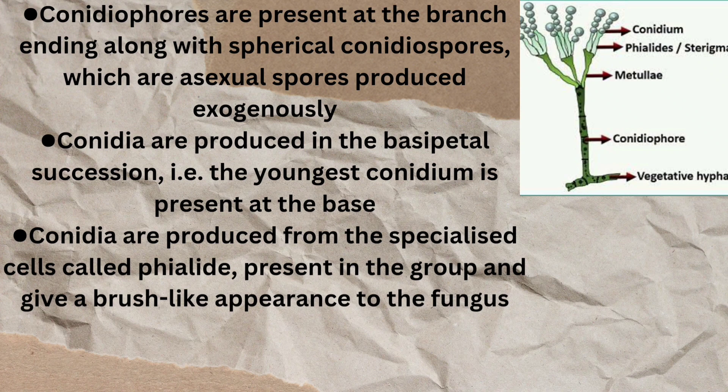The older ones are pushed up, creating a chain-like appearance — you can see the conidium chain in the diagram. Conidia are produced from specialized cells called phialides and sterigmata. You can see both of them; they are present in a group and give a brush-like appearance, as visible in the diagram.